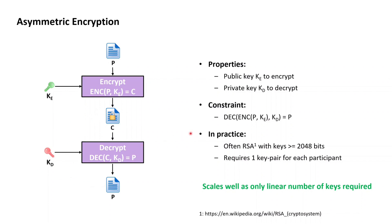In practice, an absolutely quintessential asymmetric encryption scheme is provided by RSA, and with RSA, the public-private keys involved are nowadays recommended to be of size at least 2048 bits.